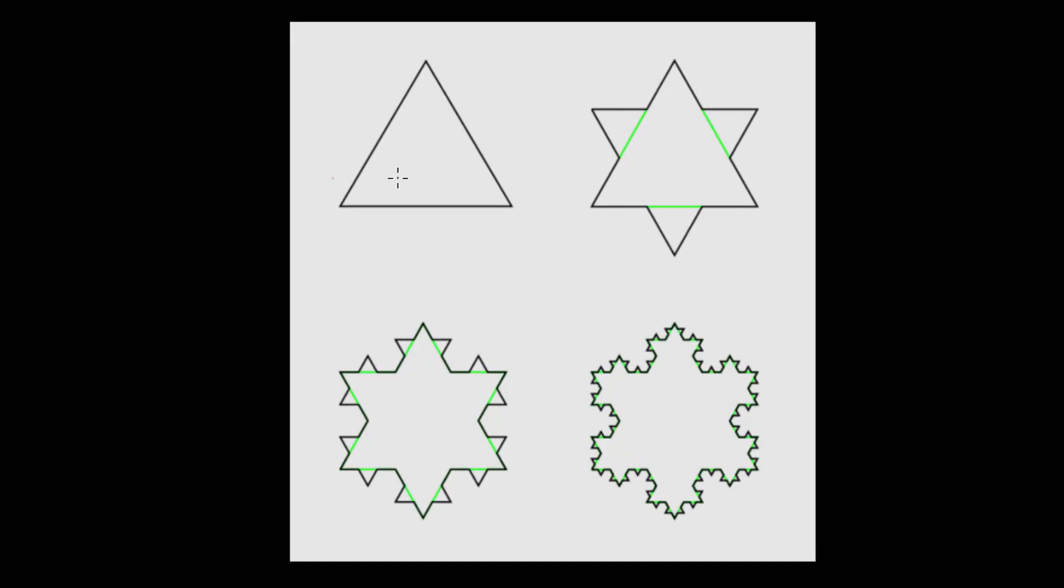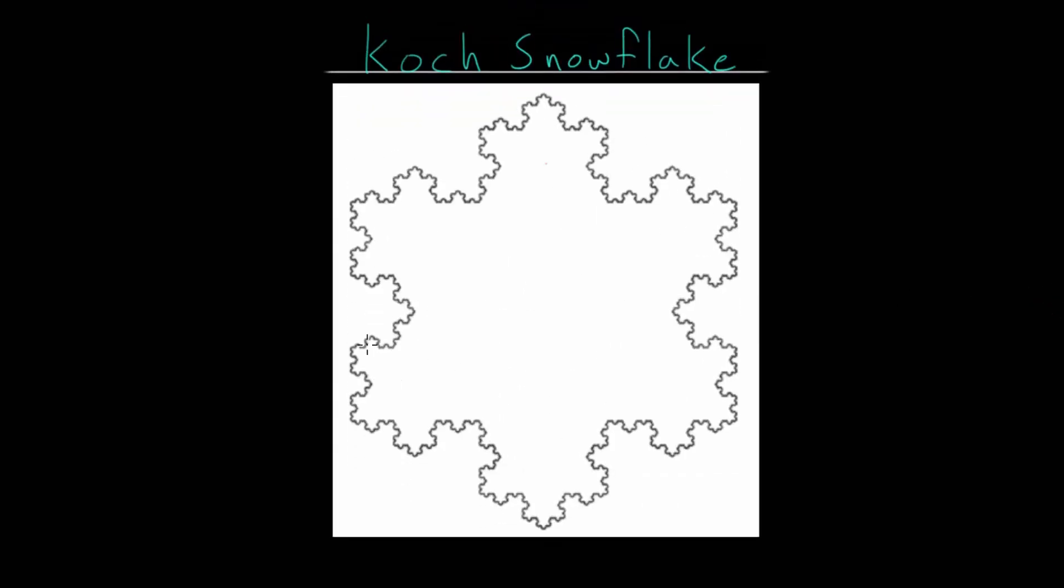In fact we will start with this triangle and we can say that each of the sides have length S, as for side length. And our final formula for the area of the snowflake will be based off of S.